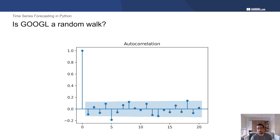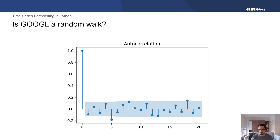Now let's check if Google is a random walk. We follow the same process: take our Google data, difference it to make it stationary, then plot the ACF. As you can see, at lag zero we have our correlation coefficient of 1. Moving out, nothing is significant besides one coefficient at lag 5. This can happen by chance — there are no consecutive significant coefficients; it's just a small blip at lag 5 and then nothing significant anymore. From this, we can say that the daily closing price of Google seems to be a random walk, and so it's probably not reasonable to try to predict it.